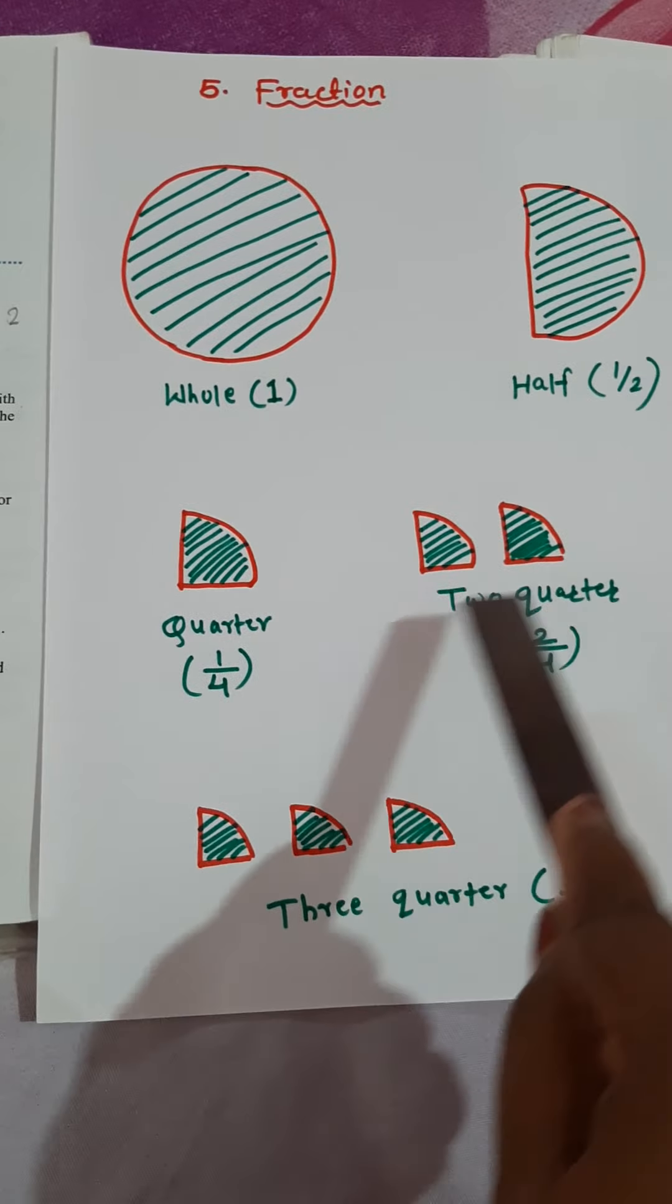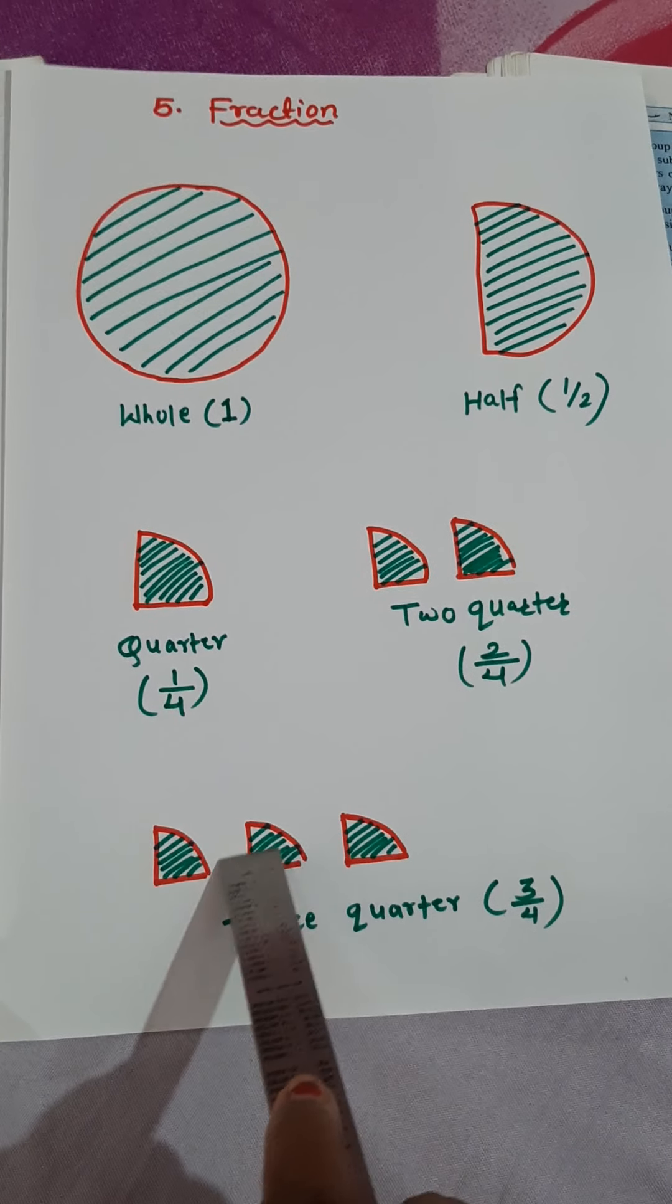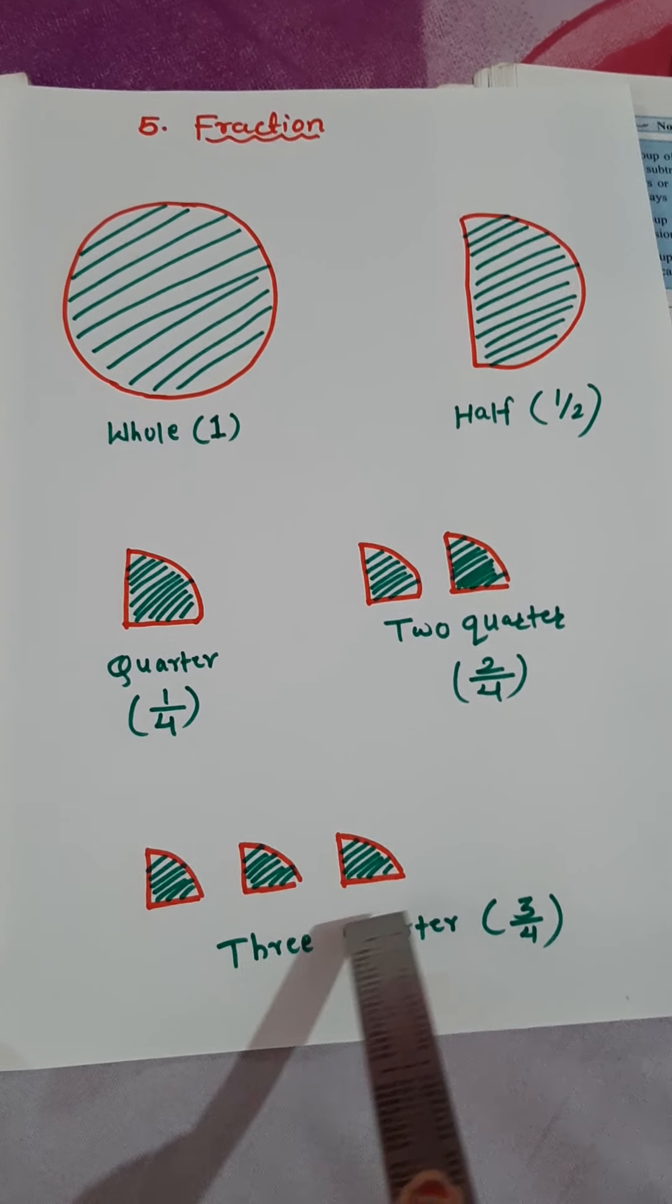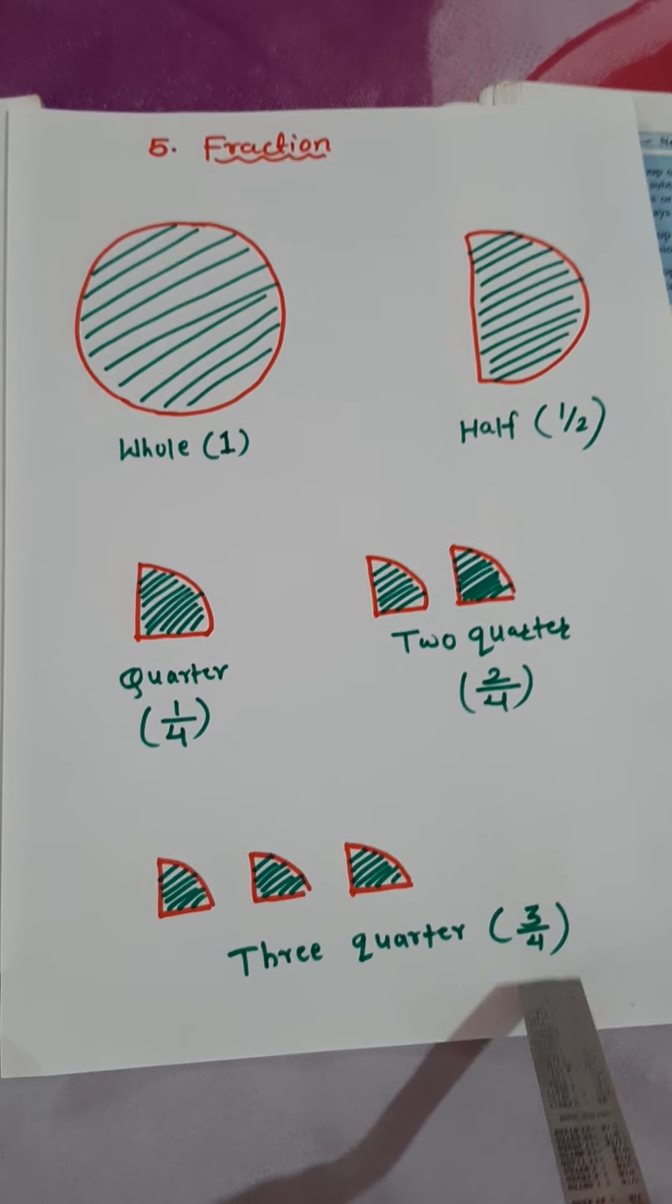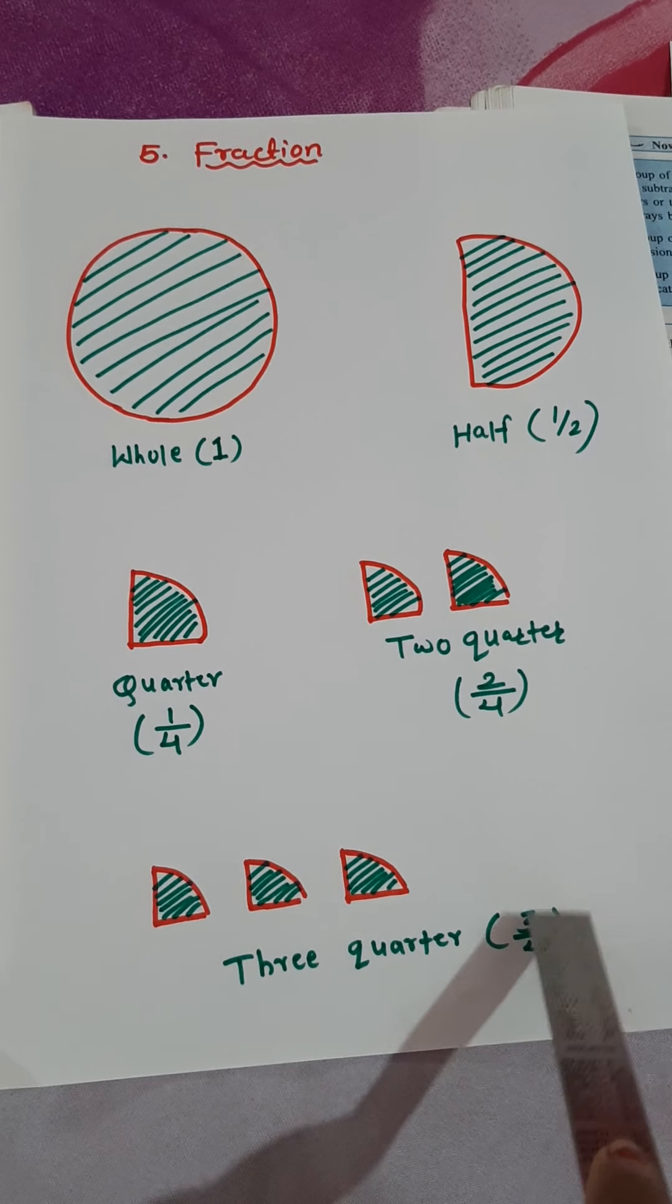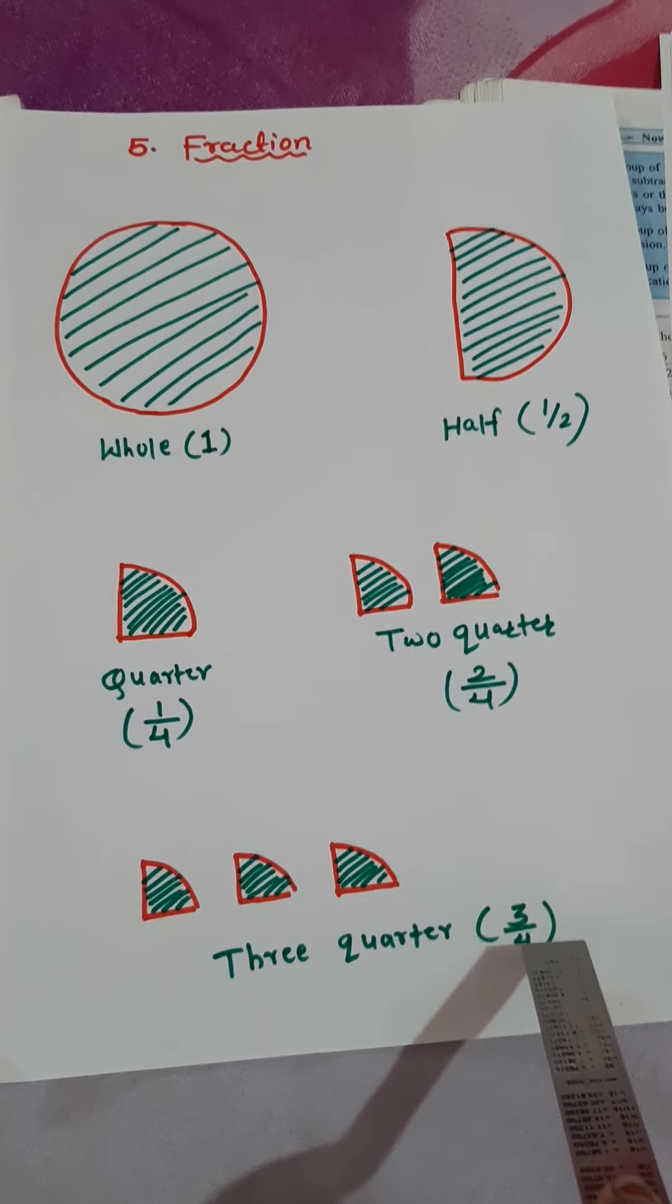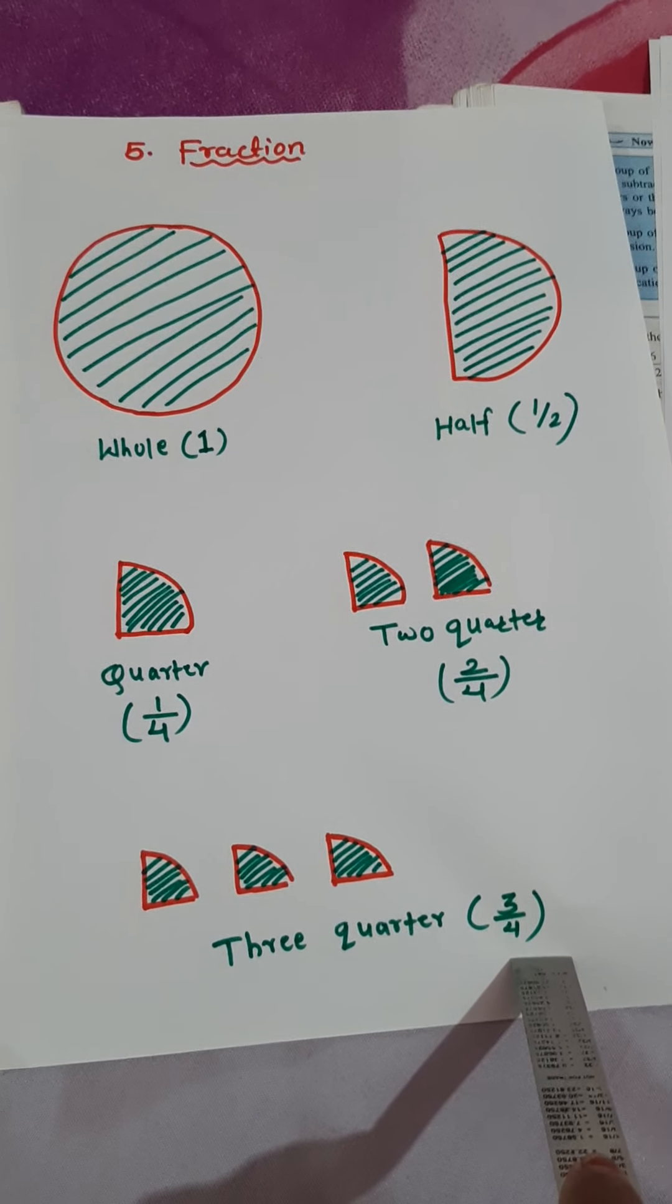If out of 4 equal parts, I will take 3 parts. That is called 3 quarters. 3 upon 4. Total parts 4 and taken parts 3. 3 is numerator and 4 is denominator.